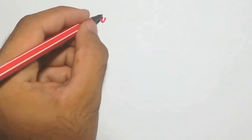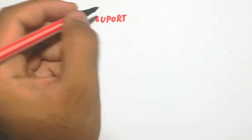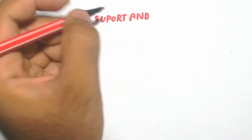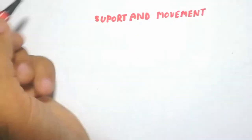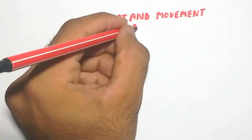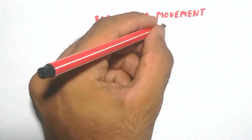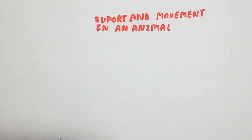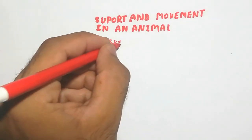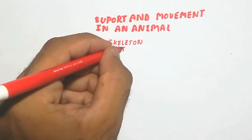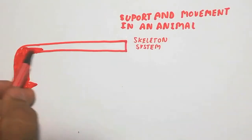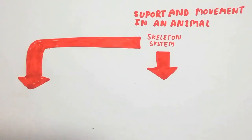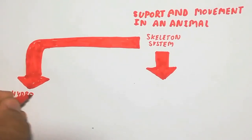In this video we will talk about support and movement in an animal. We will discuss an overview of all the diagrams. Support and movement in animals is due to the skeleton. The skeletal system is composed of different types: hydrostatic skeleton, exoskeleton, and endoskeleton.